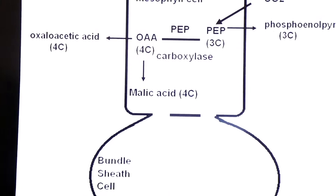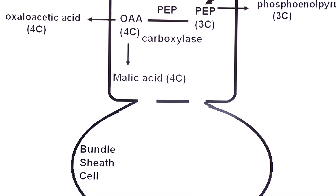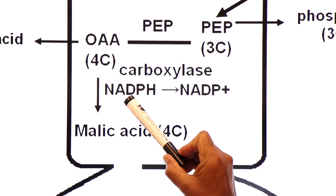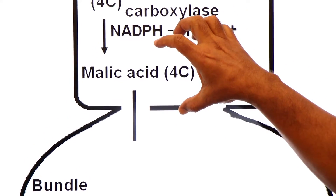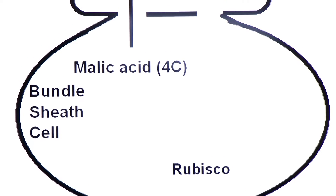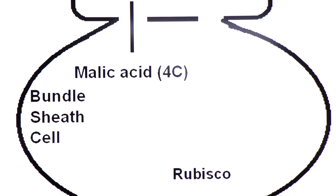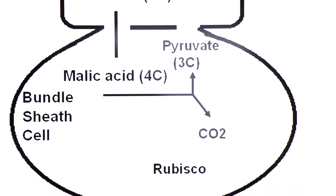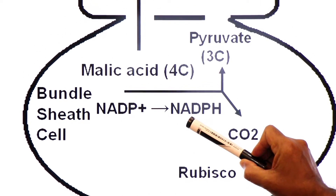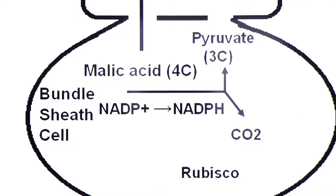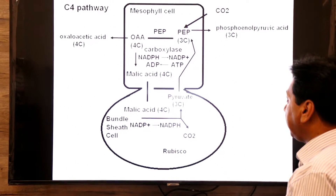Now this oxaloacetate is converted into malic acid — a 4-carbon compound. During this step, one NADPH is oxidized to NADP. Then they pump this malic acid to the inner bundle sheath cell. Malic acid undergoes decarboxylation in the bundle sheath cell — it loses carbon dioxide and creates a 3-carbon molecule pyruvate. During this step, NADP is reduced to NADPH. This pyruvate is then recycled back to the mesophyll cell, where it again creates PEP — phosphoenolpyruvate — by consuming ATP.